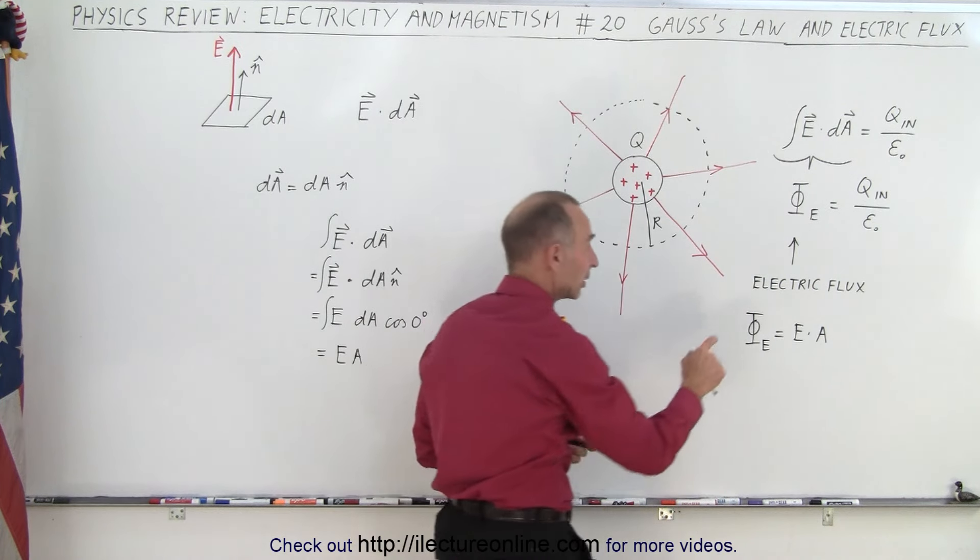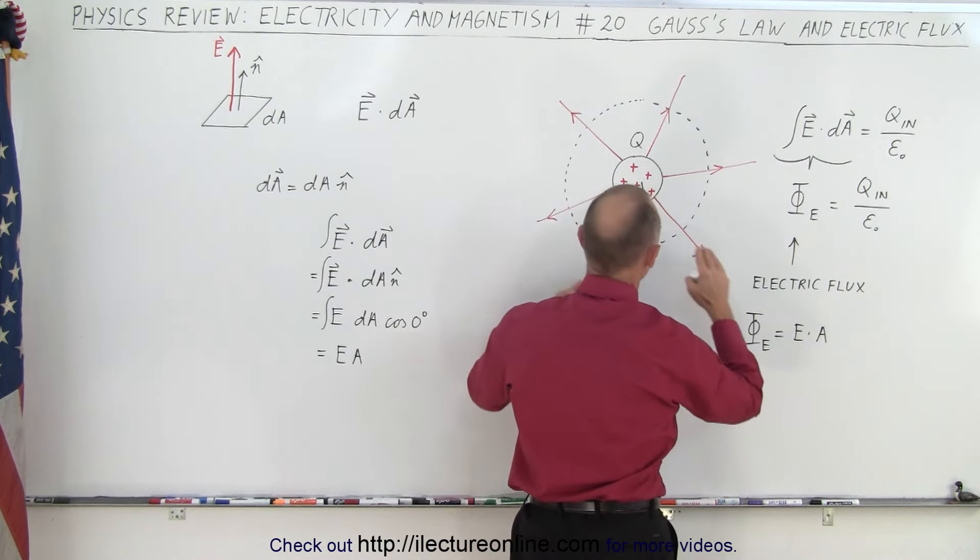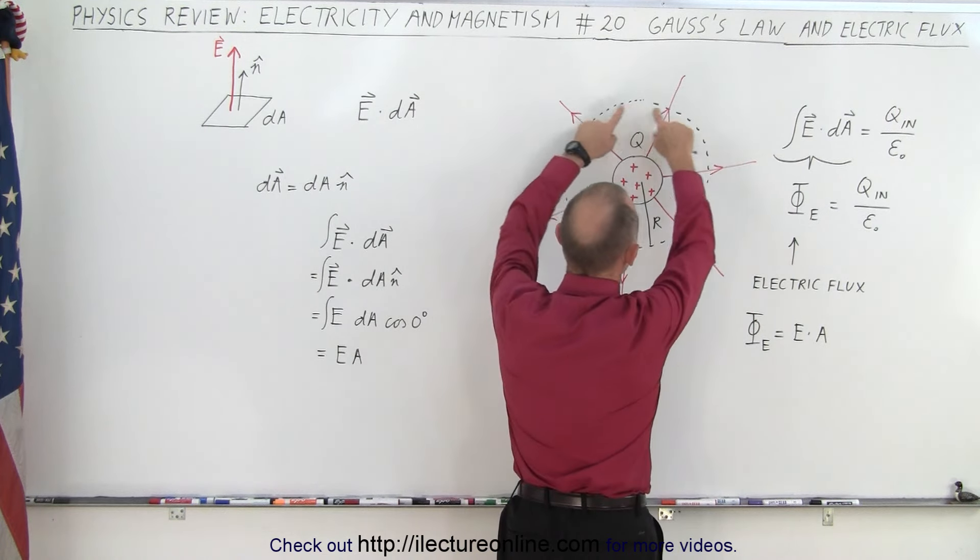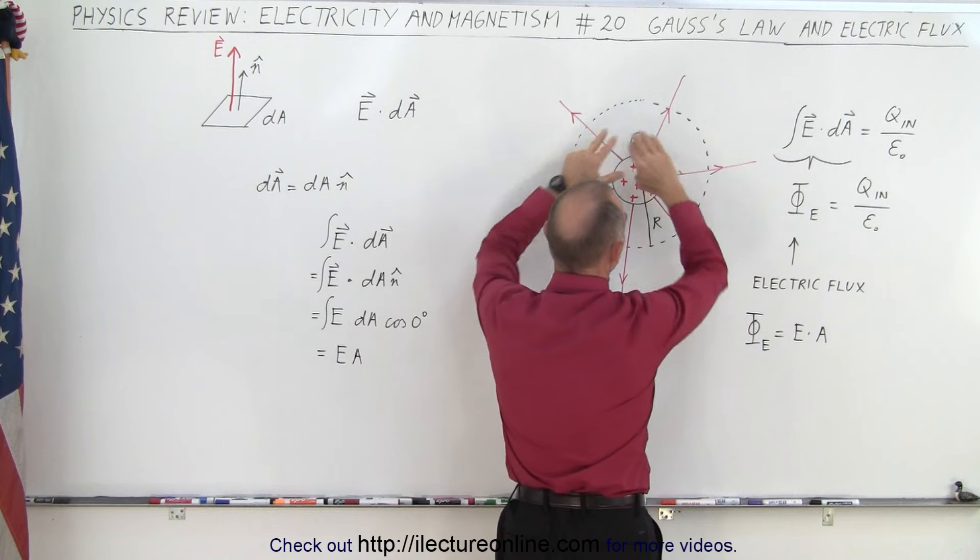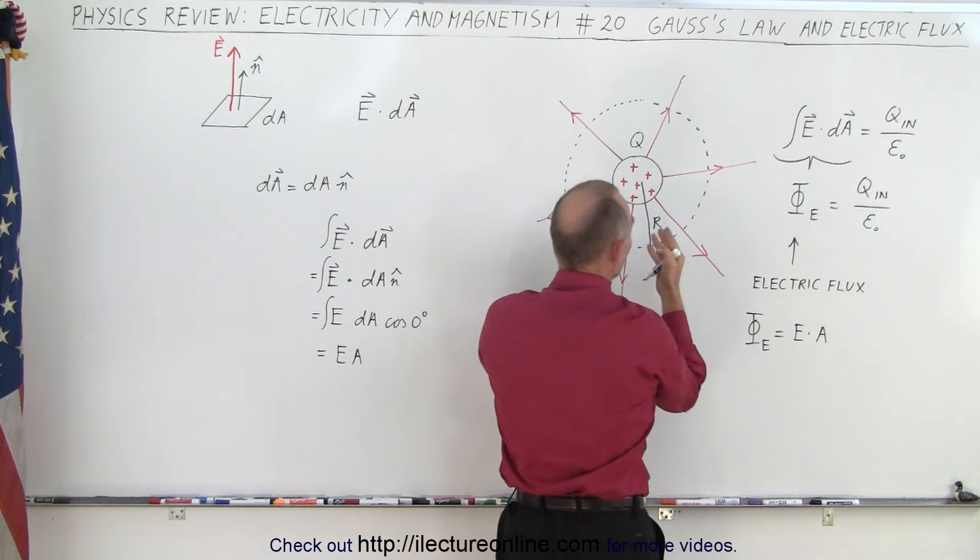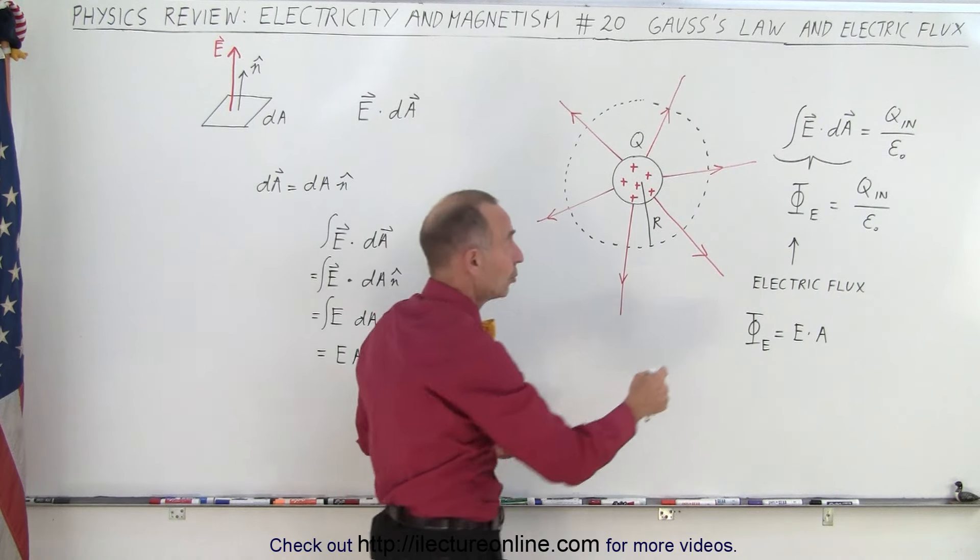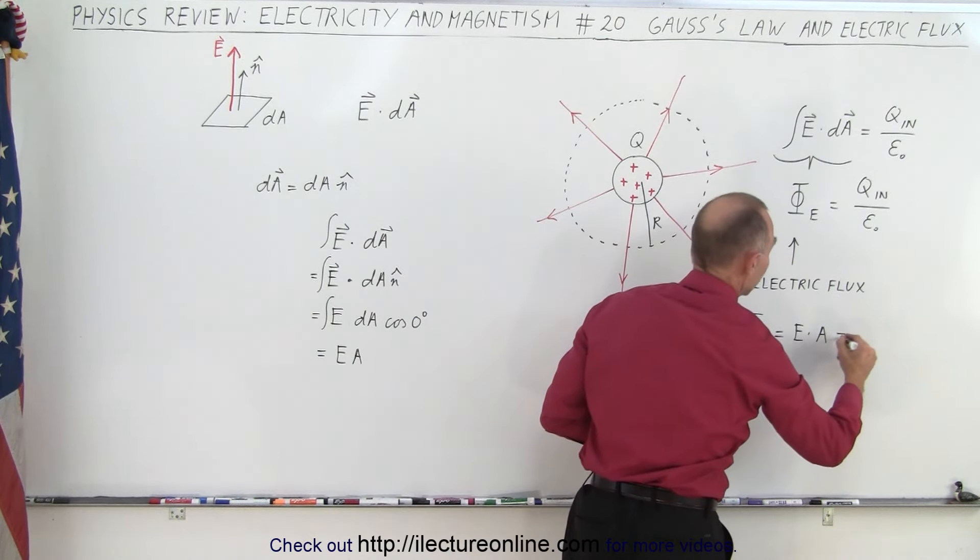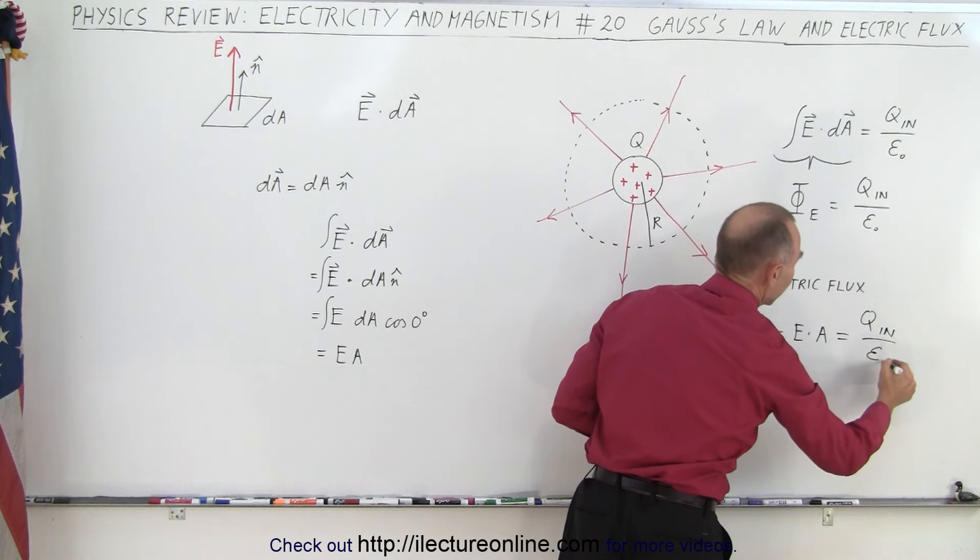We're used to seeing the electric flux like this, where it's simply equal to the electric field strength times the area. You take the electric field strength along this edge of the Gaussian surface and multiply times the area of the Gaussian surface. That is also a way we can calculate the electric flux. But since the two are the same, we can also write it as Q inside divided by epsilon sub nought.